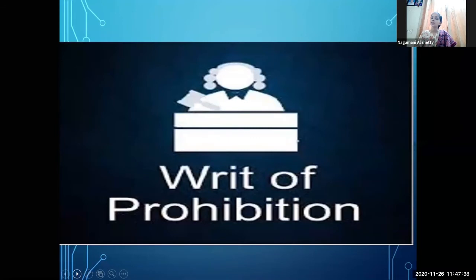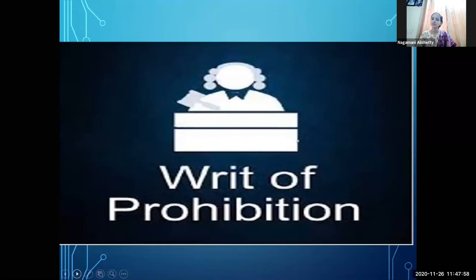The third writ is Prohibition. Prohibition means to stop, or to forbid — to prevent someone. This writ is an order to stay a judicial proceeding. It is issued by a higher court to a lower court to stop its judicial proceedings.